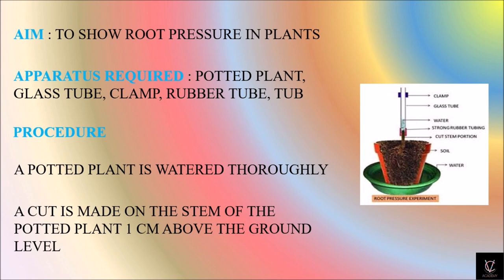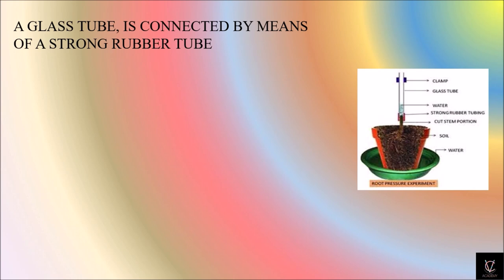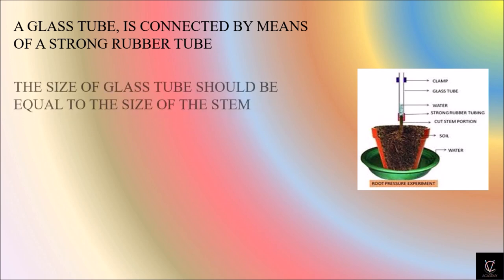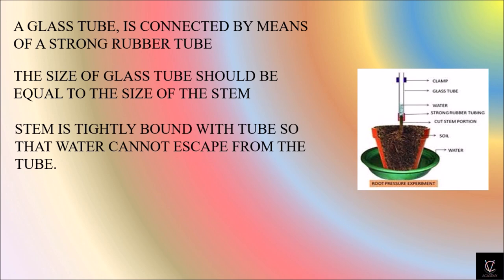The glass tube is connected by means of a strong rubber tube to the cut where it is made. The size of the glass tube should be equal to the size of the stem. Care is taken that the size of the stem and the size of the glass tube are equal in size so that the further activity can be done.